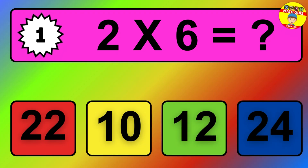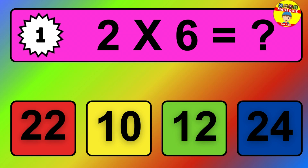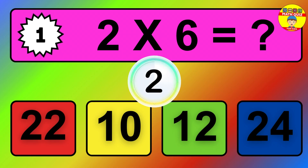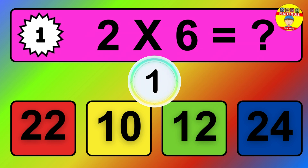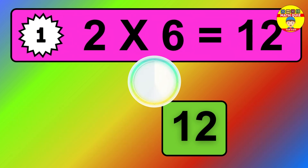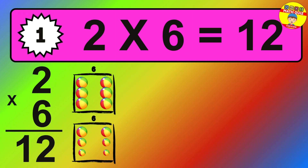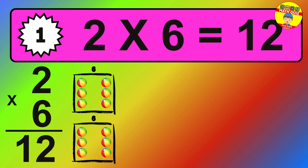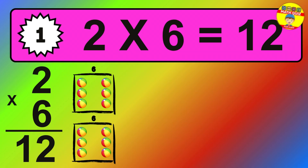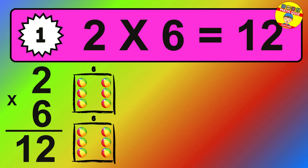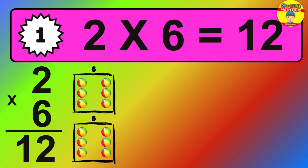Question one: two times six equals what? The answer is: two times six is twelve. To calculate, we have two groups with six balls each one. So how many balls do we have? Twelve balls.